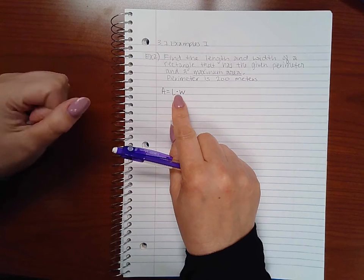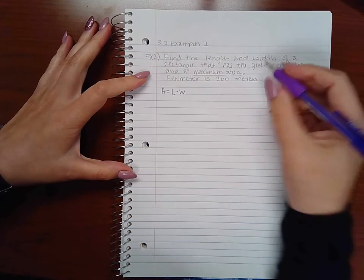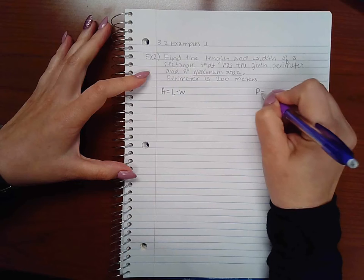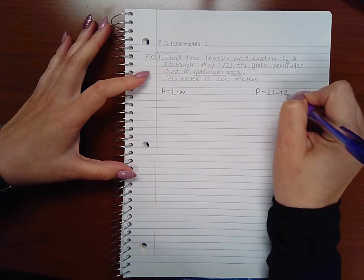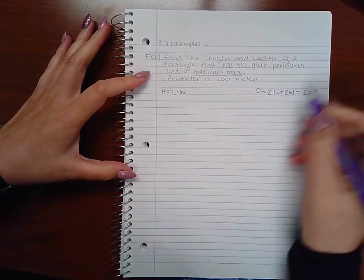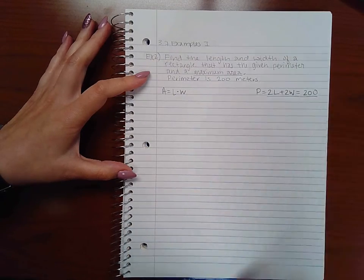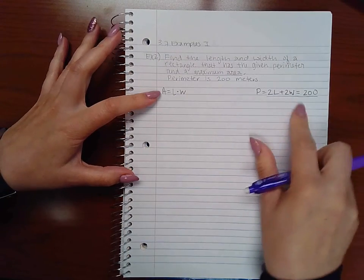To make this only have one variable, I can use my perimeter. It says my perimeter, which is 2L plus 2W equals 200 meters, so I can use this part of the equation to solve for one of the variables.